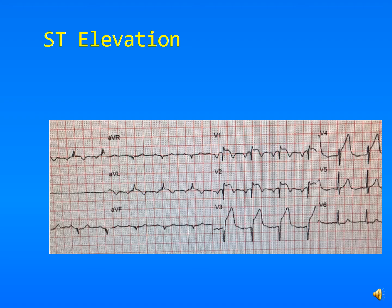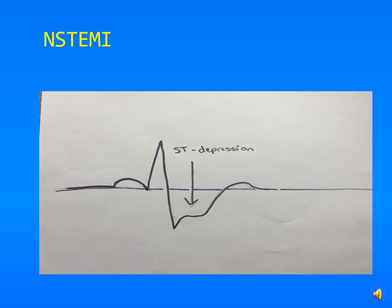Looking at this ECG, you can see leads V1 through V6. In V1 the ST segment is clearly elevated — that's obvious. To diagnose a STEMI, you need ST-segment elevations in contiguous leads. Contiguous leads means areas that are similar in terms of the infarct region — for example, V1 and V2 cover a similar region of the heart. You can't have elevation in V1 only; it needs to be in contiguous leads reflecting similar areas.